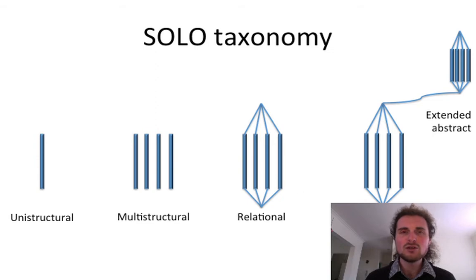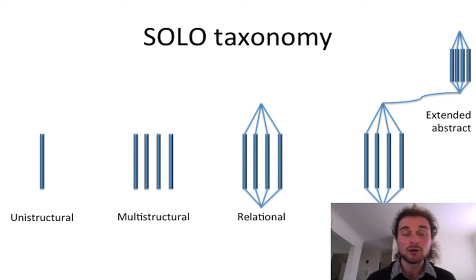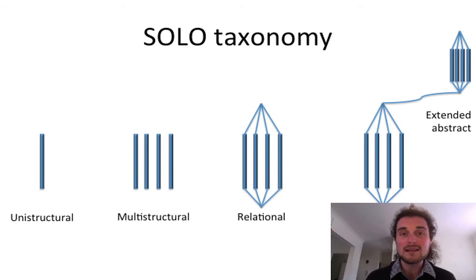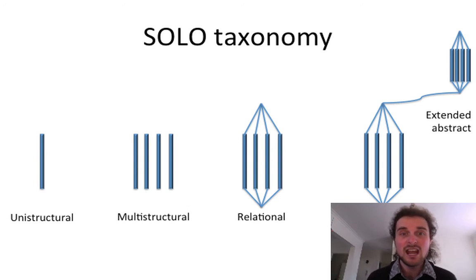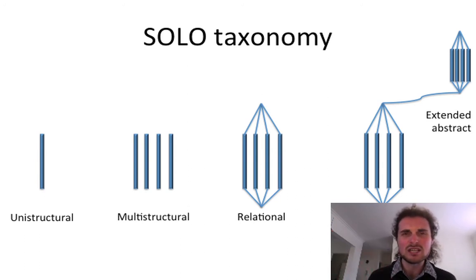A uni-structural task where someone is required to just identify something — like identifying a bone on the human body — is very different from an extended abstract task where someone is required to create something, to engage in the sorts of things we would consider research, and there's a range of tasks in between those two things.